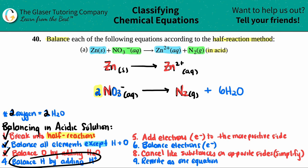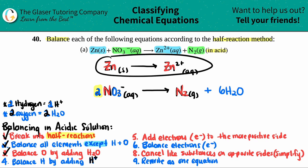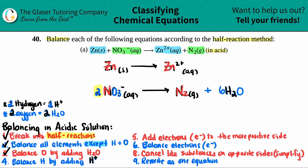Now we balance hydrogen by adding H⁺. The rule is: if you need one hydrogen on any side, you add one H⁺; two hydrogens, two H⁺, and so on. Looking at the top equation, there's no hydrogen on either side, so I skip it. In the bottom equation, each H₂O has two hydrogens, and there are six of them, so six times two gives 12 hydrogens on the right. Since I have none on the left, I add 12 H⁺ to the left side. Step four is done.